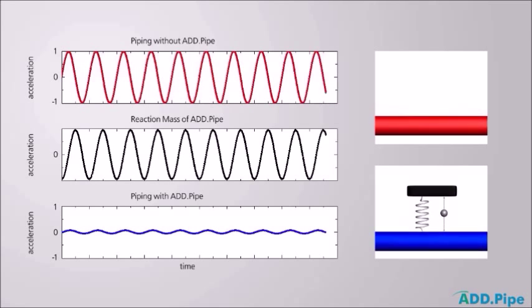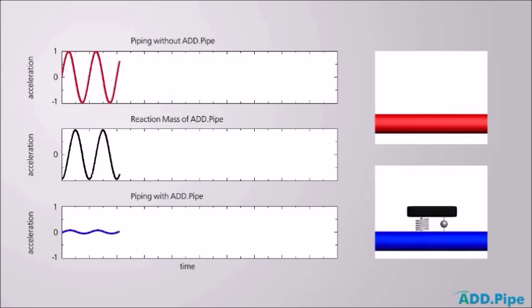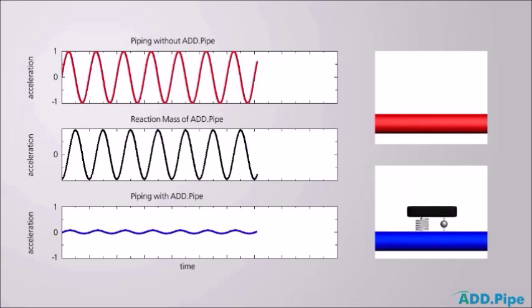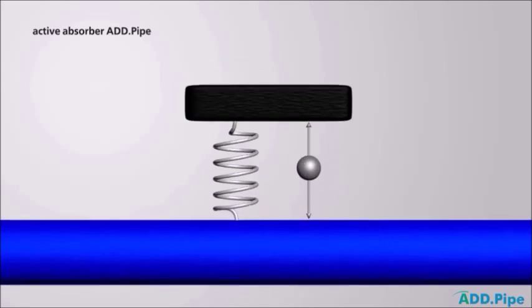By the superposition of both vibrations, the vibration of the piping system is reduced efficiently, here displayed in blue. Thus, the active absorber acts efficiently even with little reaction mass, and reduces the vibrations of a piping system considerably, and this without the utilization of any abutment.